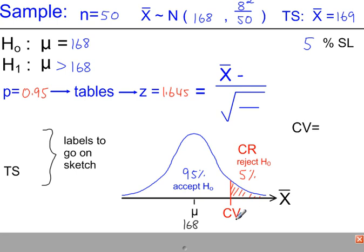So we're now going to work out the critical value here using this 1.645. So in the standardising formula, we have the sample mean minus the population mean, 168, divided by, and inside the square root, we need to put 8 squared over 50, the variance.